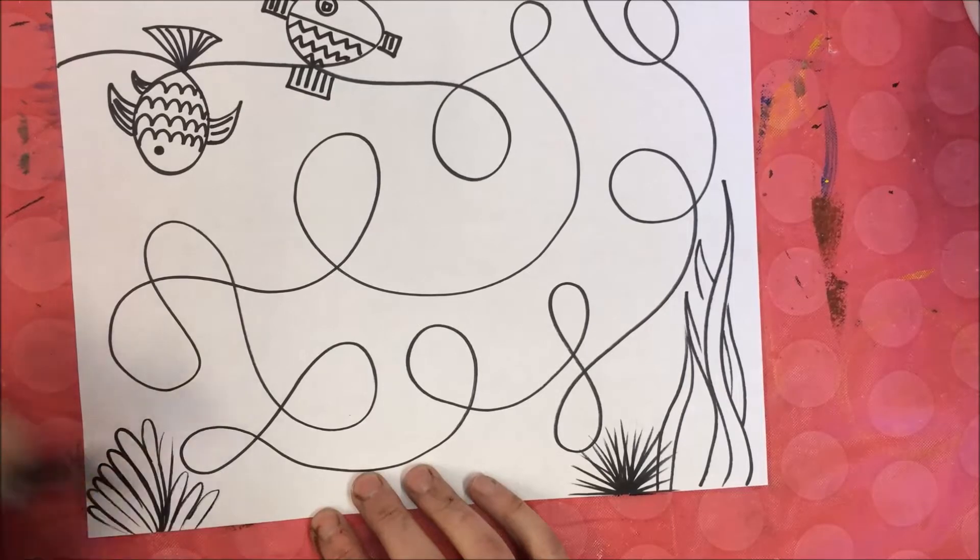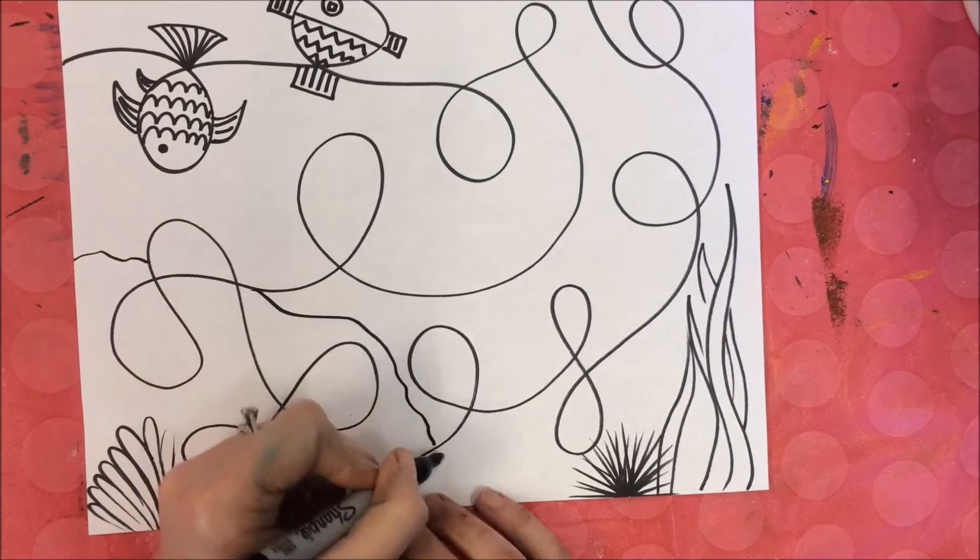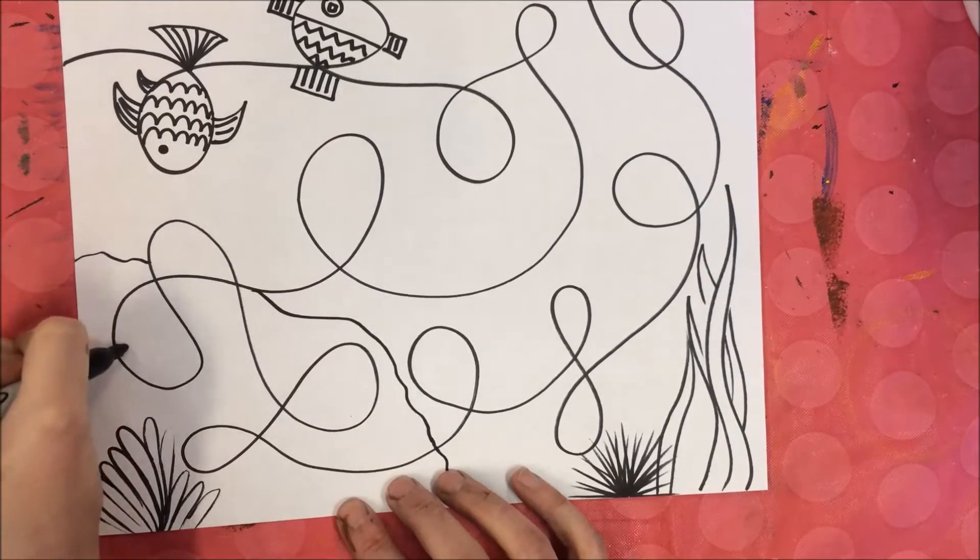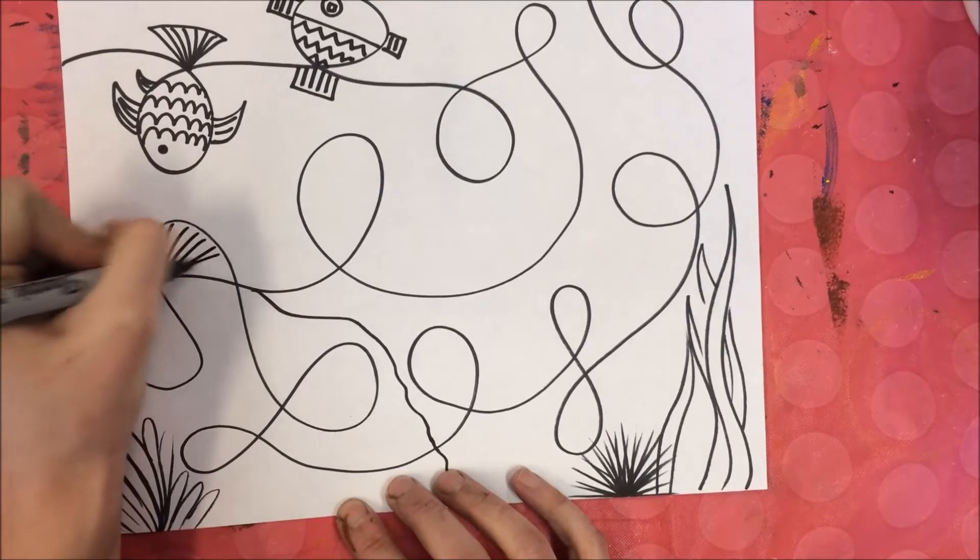You could also include sea rocks, the ocean floor going back behind something or behind your fish. This one right here I'm going to make it into a fish. This part here is going to be the tail.